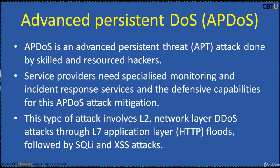Advanced Persistent DDoS attack is an Advanced Persistent Threat — APT — attack. This is done by skilled and resourced hackers. Service providers need specialized monitoring, incident response services, and defense capabilities for APDOS attack mitigation. This type of attack involves Layer 2 network layer DDoS attacks through Layer 7 application layer HTTP floods, followed by SQL injection and cross-site scripting attacks.